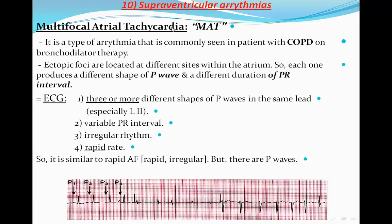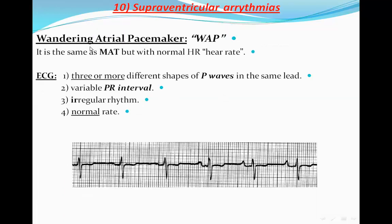In multifocal atrial tachycardia, the P-waves have different shapes and different PR intervals, and the rhythm is irregular. The only difference between MAT and atrial fibrillation is the presence of P-waves — if you suspect AF but find P-waves, especially at least three different shapes in lead II, the diagnosis is MAT. A similar condition is wandering atrial pacemaker (WAP), which resembles MAT but with a normal heart rate — there is no tachycardia, just irregular rhythm with different P-wave shapes and different PR intervals.